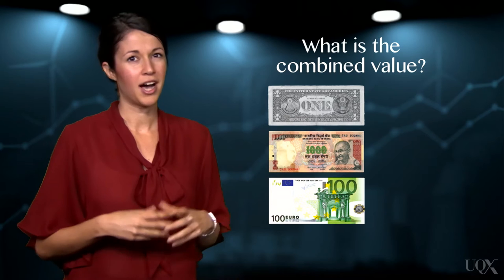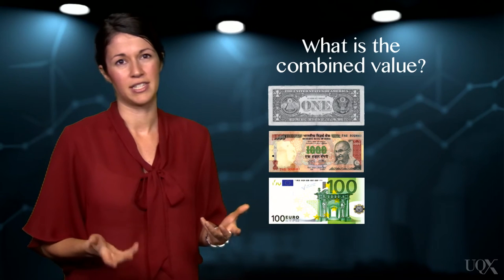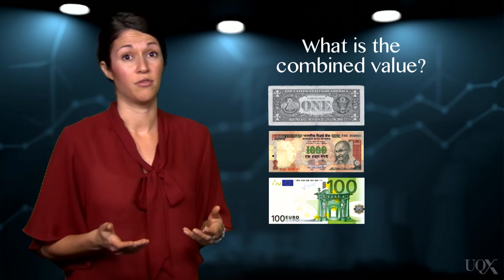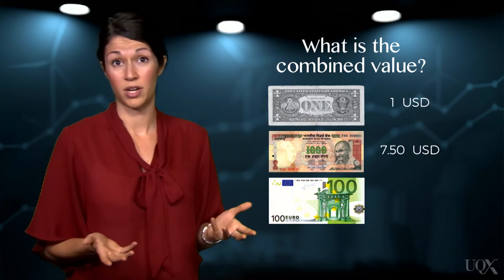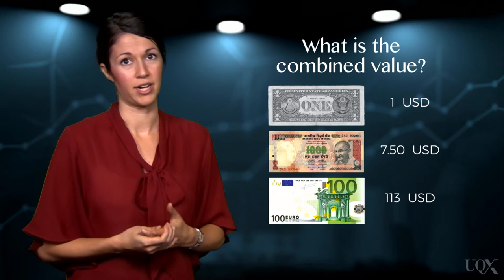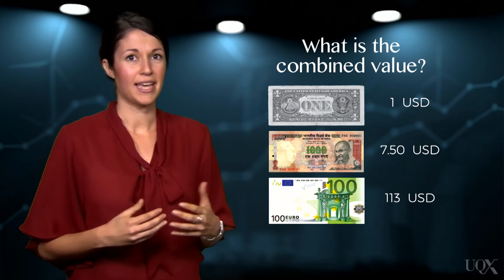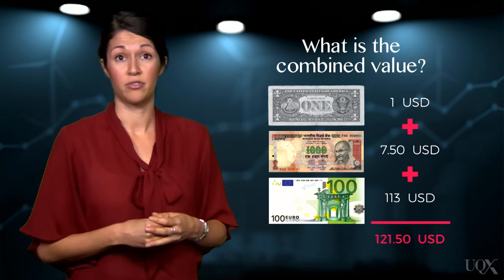Obviously, you can't add the three different currencies together. So first you convert all three values into a common denomination, let's say US dollars, using exchange rates. Then they can be summed together to give a single value.